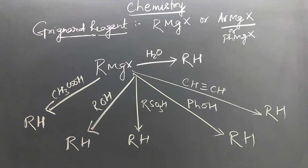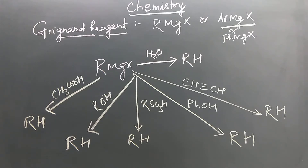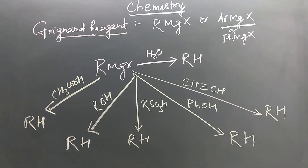Any source of proton can convert Grignard reagent to alkane. RMgX when treated with water or when it comes in contact with moisture will form alkane. When treated with acetylene, because acetylene is acidic enough to give a proton, it reacts with the alkyl group of Grignard reagent to form alkane. It also reacts with phenol, alkane sulfonic acid, alcohol, and acetic acid to give alkane.